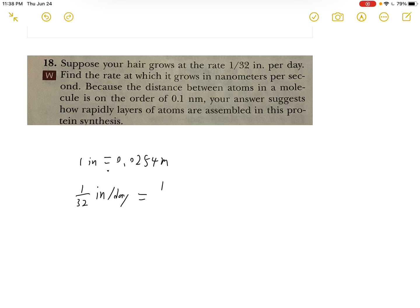We will convert this to meters per second first. Then 1 over 32 inches per day times 0.0254 meters over 1 inch times 1 day over 24 hours times 1 hour over 60 minutes times 1 minute over 60 seconds.